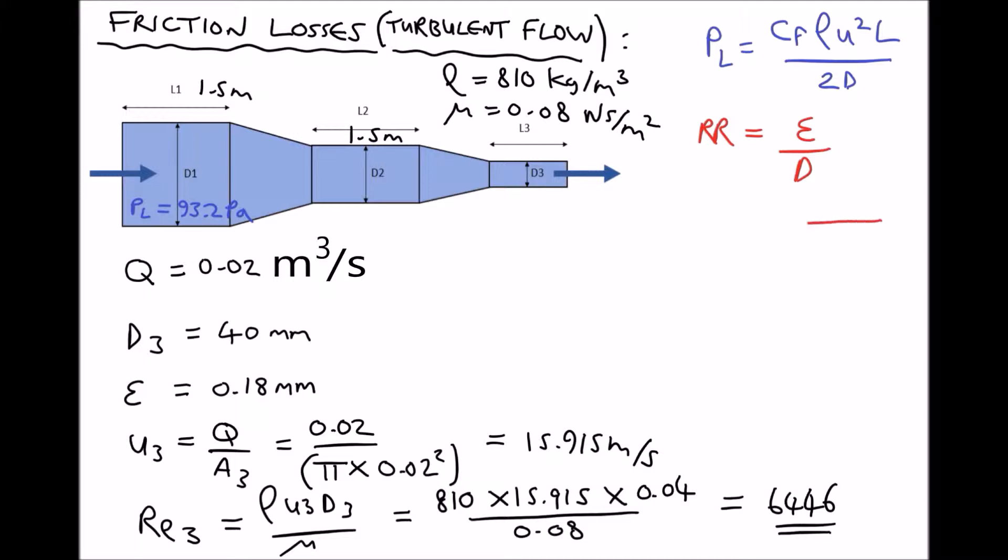If we look at any material under a microscope, the surface is never completely smooth. Instead it would have peaks and troughs, which are known as asperities. And this value ε is a measure of the average size of these asperities. And it's usually given in millimeters. So in this case, we can see that our value of ε is 0.18 millimeters.